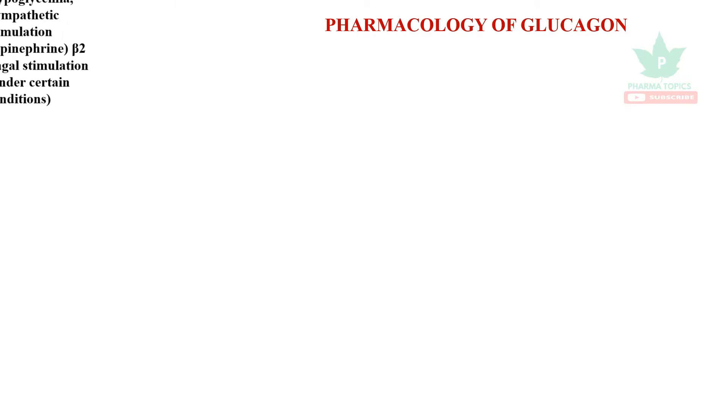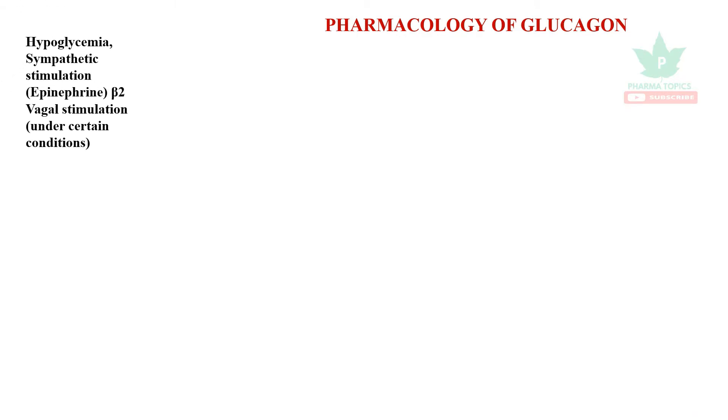Welcome to our pharma topics channel. Let us look at the pharmacology of glucagon. Glucagon is secreted under certain conditions such as hypoglycemia, sympathetic stimulation of beta-2 receptors, or vagal stimulation.